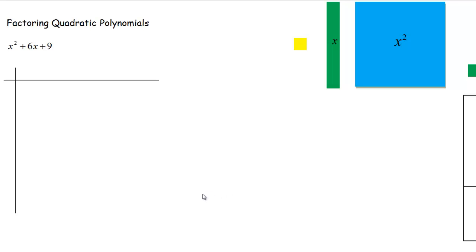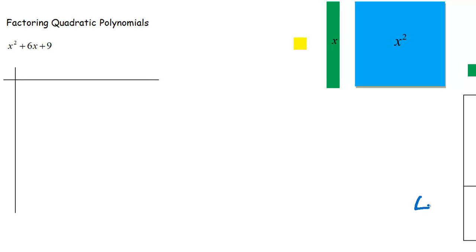Now we're going to do factoring quadratic polynomials. Think of factoring as the backwards of multiplying — it undoes multiplying. For example, if I take the number four and want to factor it, I ask: what times what gives me four? One times four gives me four, and so does two times two. So if I wanted to factor four I could go one times four or two times two.